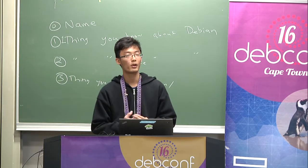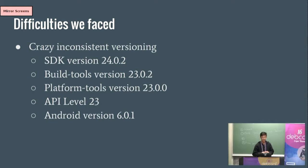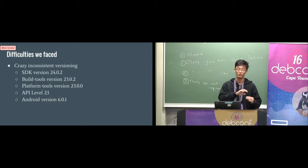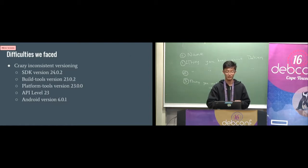During the project we met some difficulties. The first one is there are too many versions. The SDK has its own version and basically has three components: SDK tools, build tools, and platform tools — all with different versions. Android also has an API level and its own version. We didn't know at first which tag to check out in a Git repo to get the right code. But finally we settled on the Android version, checking out the Android version tag in the Git repo to get an upstream.